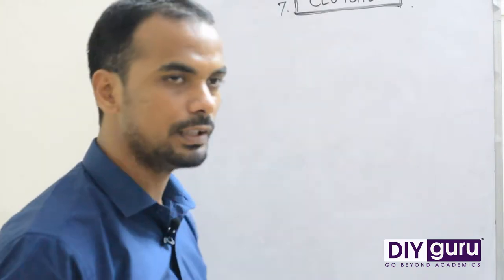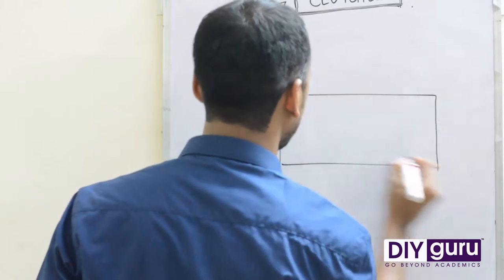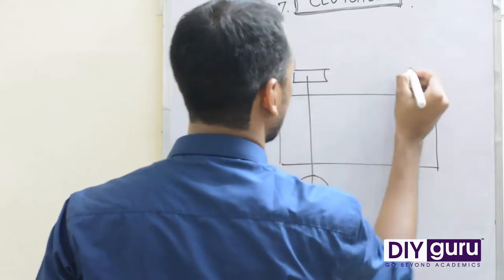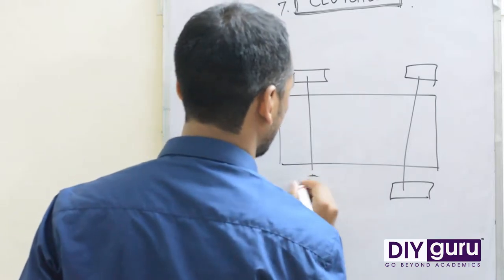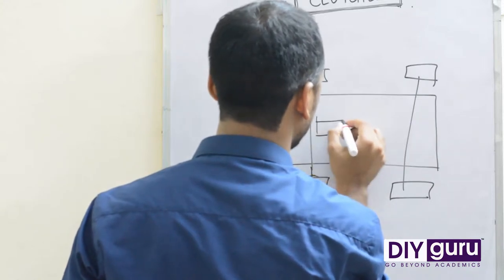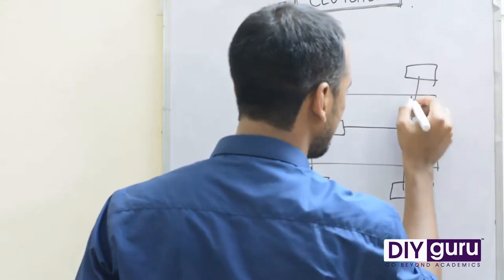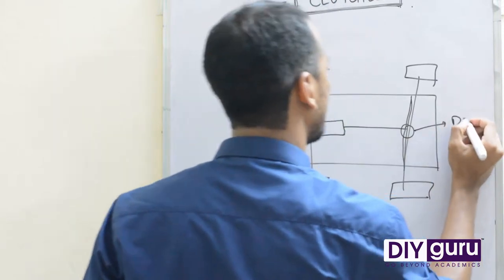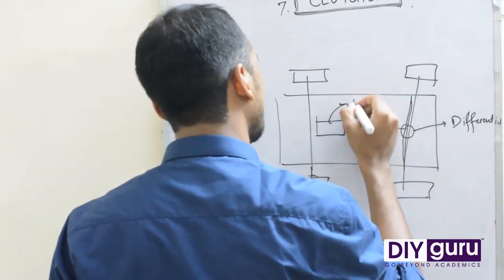Clutches are considered when we talk about transmitting power from engines. For example, if this is your car and the engine is mounted in front with a drive shaft extending to the rear, this is the transmission. This is the part called the differential, and this is your engine.